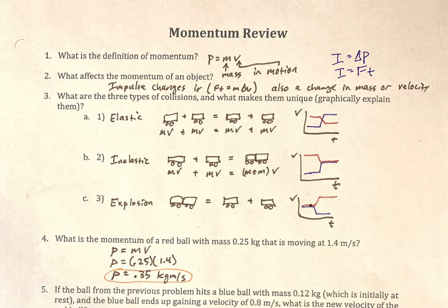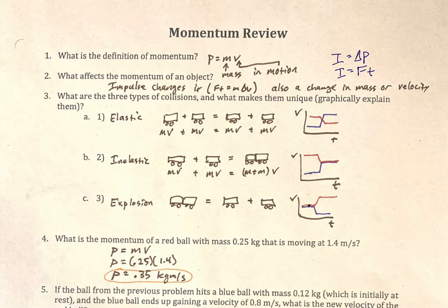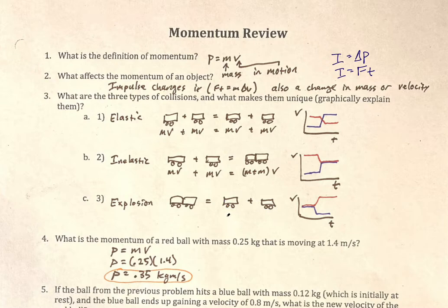Explosions are just the exact opposite. These two graphs are just the reverse of one another — we started with an object moving as if it were one, and then it split apart. Looking at the dynamics carts in class, they had a spring between them. You put two carts next to each other, release the spring, and they go flying apart. An explosion might start with objects at rest or at some velocity, but we end with two objects each getting its own MV.